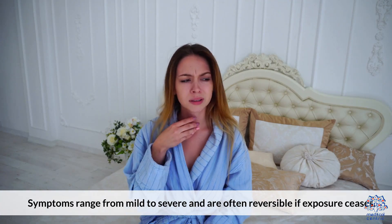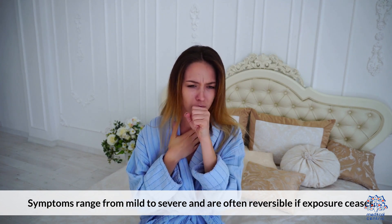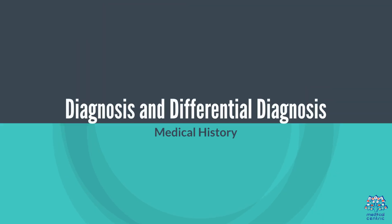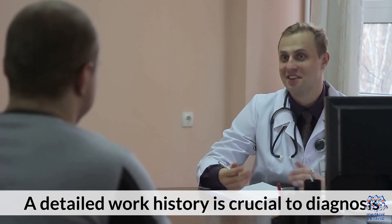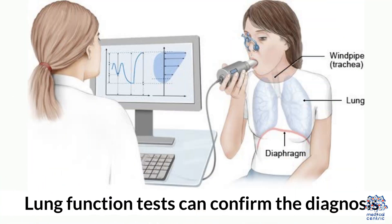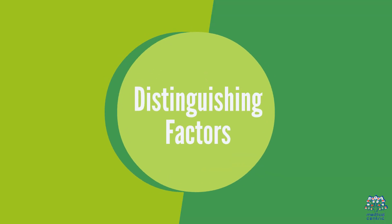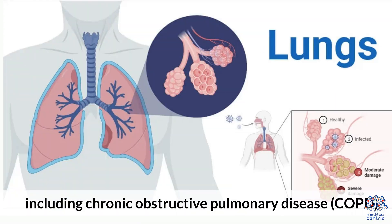Symptoms range from mild to severe and are often reversible if exposure ceases. Diagnosis requires a detailed work history, which is crucial. Pulmonary function tests can confirm the diagnosis. Byssinosis must be distinguished from other lung conditions, including chronic obstructive pulmonary disease (COPD).